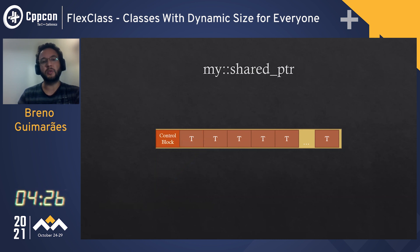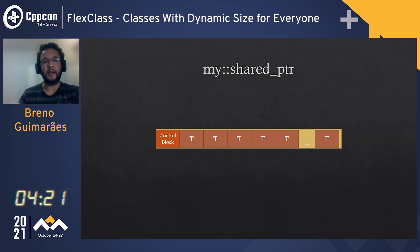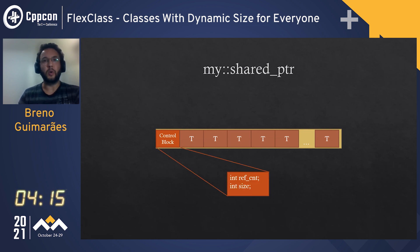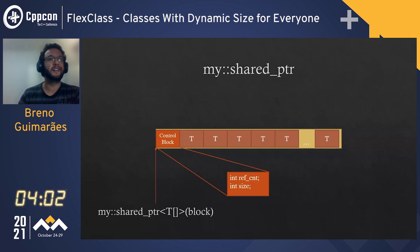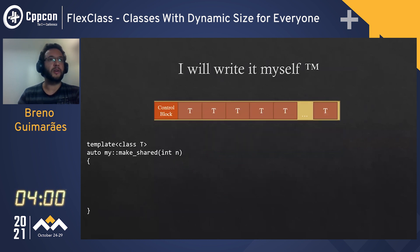However, in my application I could not afford to have such a big control block. I needed a slightly different control block with a ref count and a size, packed in eight bytes, and also store the size to know how many elements were in the array. Since makeShared did not allow me to customize that, I had to write it myself.